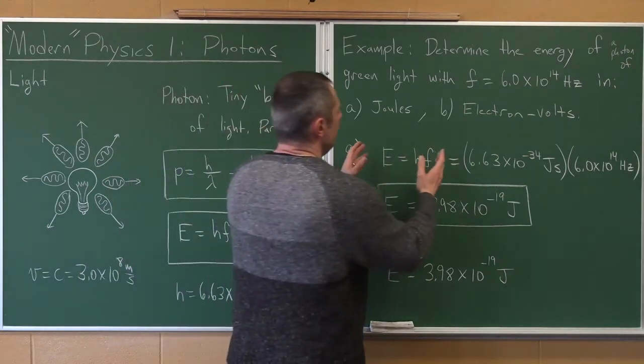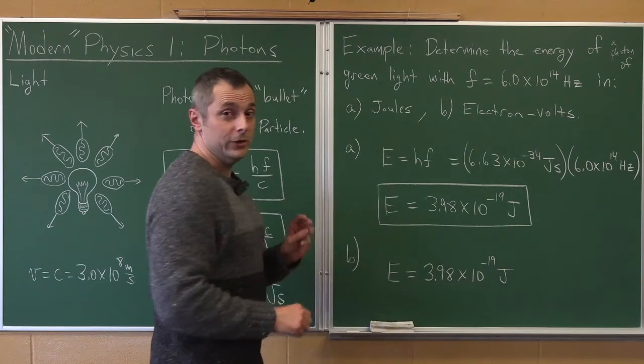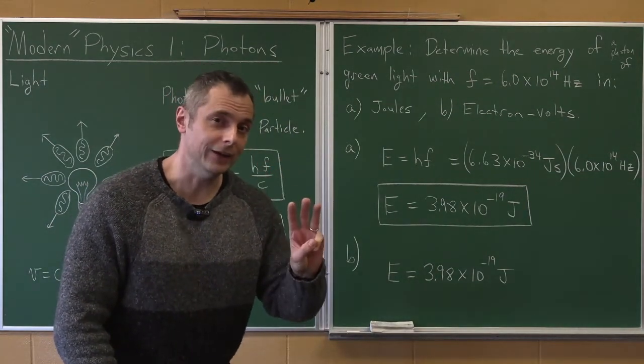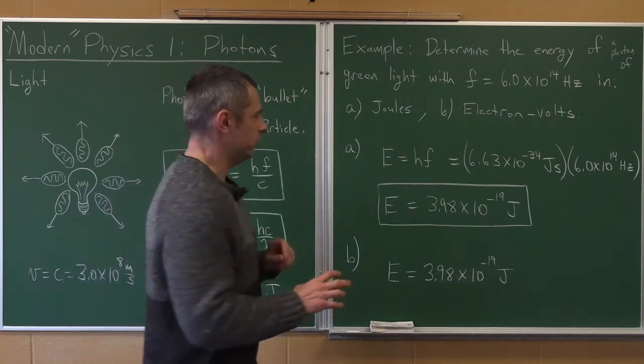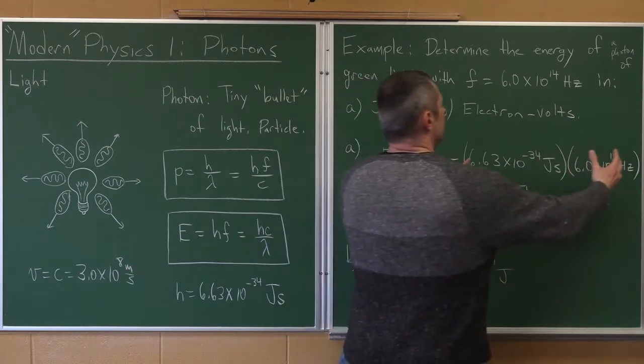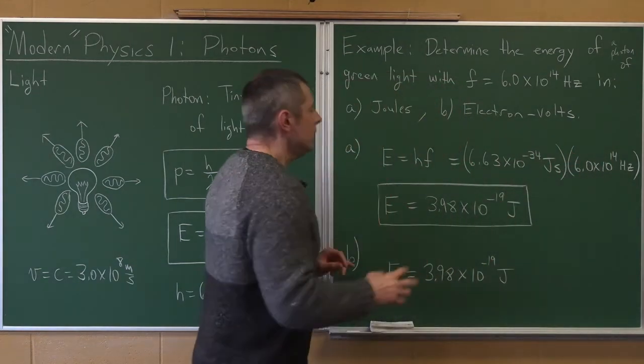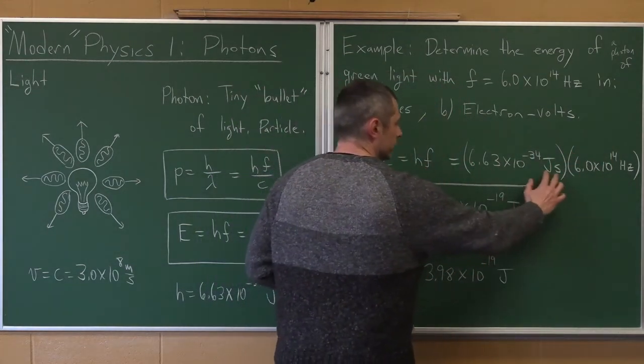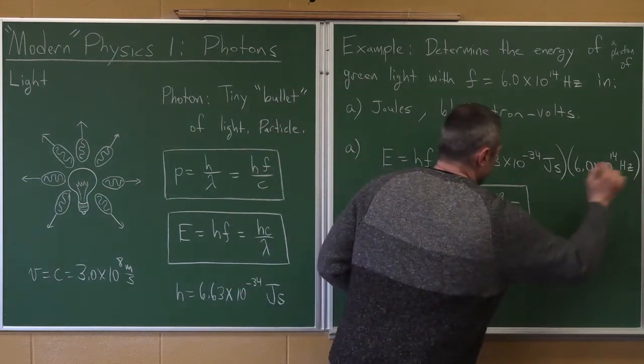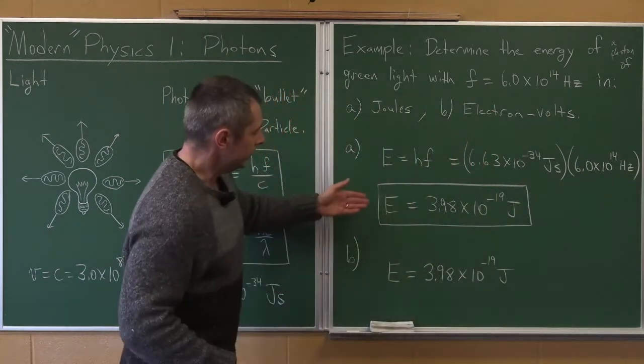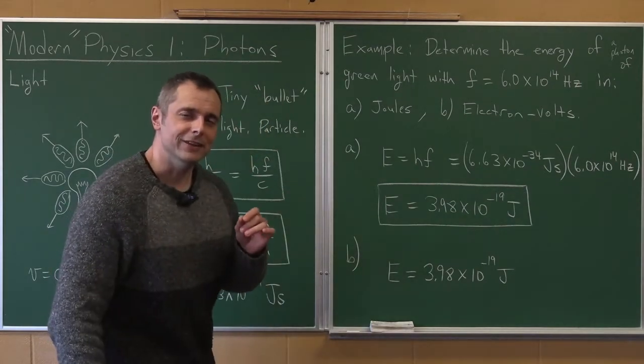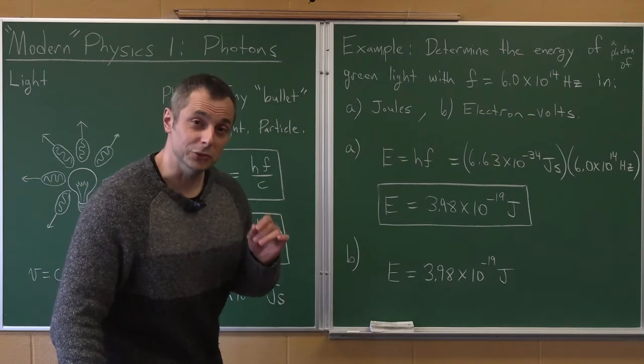So, the first thing, the energy in joules. So, we go to the reference table. We find this formula. We write it down. Remember, Regents, you have to show three steps in all calculations or you're going to lose points. So I write the formula. I write out Planck's constant, 6.63 times 10 to the minus 34. Don't forget the units of joules seconds. The frequency. Don't forget the units. Punch it on the calculator. 3.98 times 10 to the minus 19th joules.